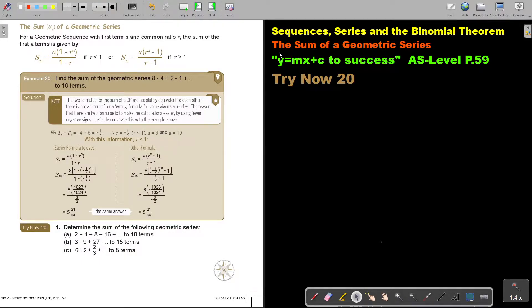In this video, we will look at the sum of a geometric series. You will find this on page 59 in the Namibia AS level mathematics textbook, Y equals MX plus C to success.